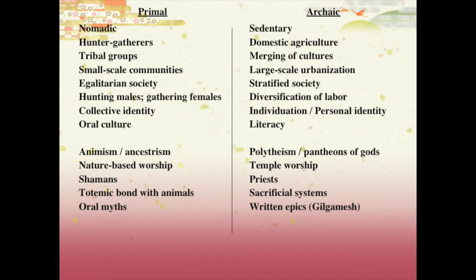Primal people are nomadic — they're always moving. They're hunter-gatherers, hunting animals and gathering roots, grains, and fruits. They're small-scale communities — family communities. When we say a tribe, that basically means an extended family. They are egalitarian, meaning everybody is basically equal. There will be a patriarch or matriarch simply by the fact that they're the oldest and most respected — much like a grandparent in your own family.